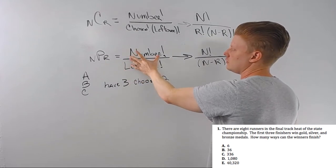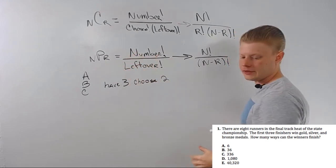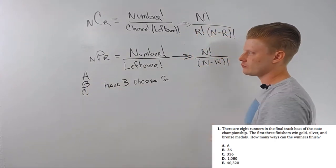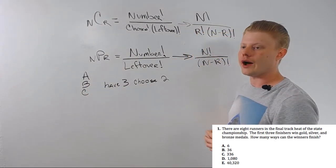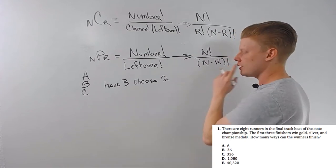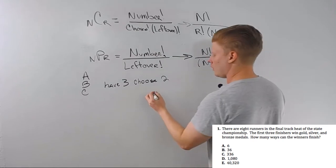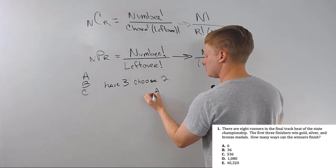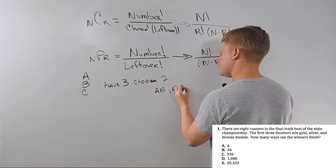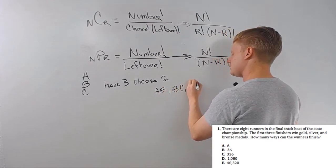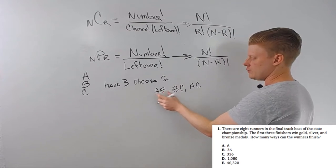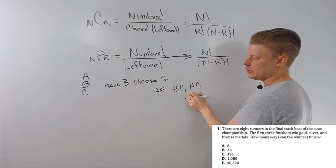For permutations, it's number divided by leftover. Let's say I have three things: A, B, and C. I have three and I choose two. For combinations, I don't care about the order — I just care that they exist. So working it out: I can pick A, B; or B, C; or A, C. Since order doesn't matter, those are the only ways — three ways.